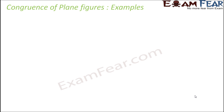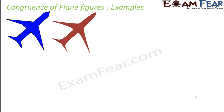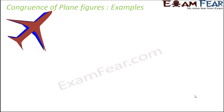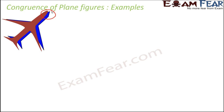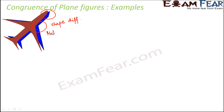So let us look at more examples of congruence of plane figures. Look at these two aeroplanes — do you think that they are congruent? Even though both of them are aeroplanes, the moment you try to place one above the other you notice the difference in their shapes. You find that their tips are different, and for the brown one the edge is thinner while for the blue one it is broader. So they do not completely overlap each other because their shape is not the same, therefore they are not congruent.